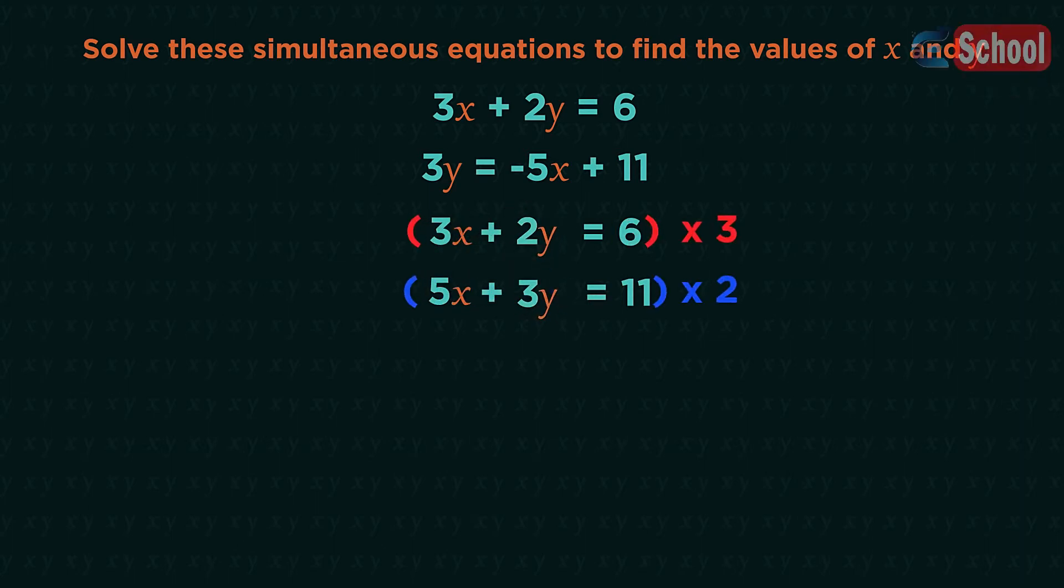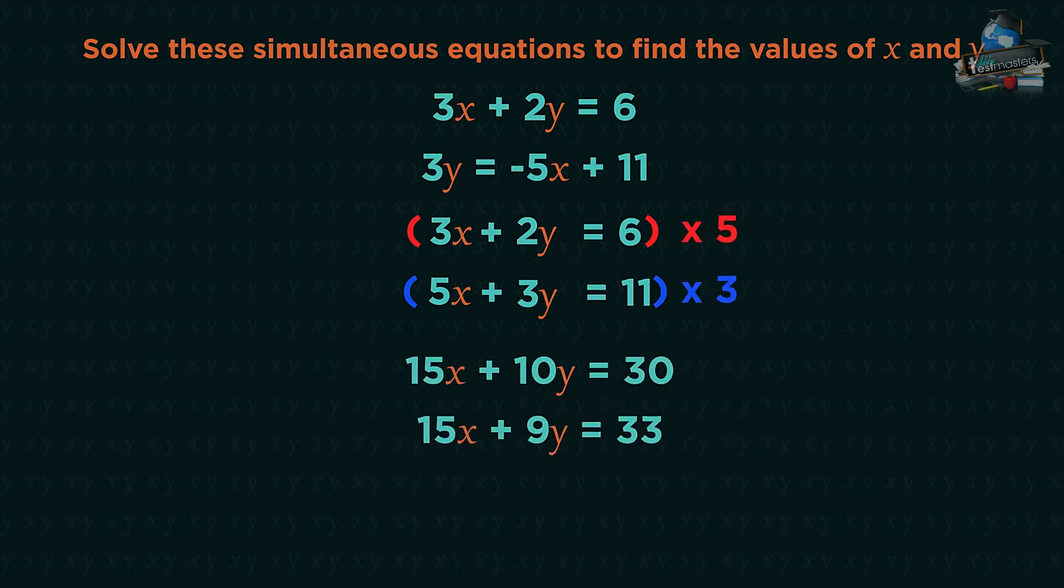So we're going to have to multiply the whole equations to match up one of these letters. I'm going to multiply everything in the top equation by 3 to get 6y, and everything in the bottom equation by 2 to also get 6y. Maybe you wanted to match up your x's instead, so you could have multiplied the top equation all by 5 and the bottom equation all by 3. It makes no difference, you'll still get the same answers.